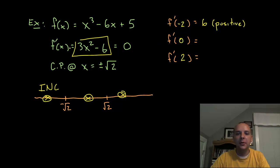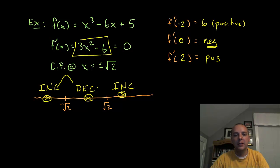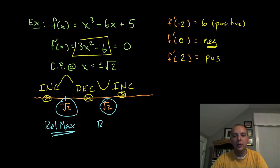If you plug in 0, 0 minus 6 is -6, that's negative, that's the important thing, so it's decreasing. And if you plug in positive 2 you get positive 6 again, which means that the graph is increasing here. So the graph goes increasing to decreasing, and then decreasing to increasing, so it should be pretty clear that -√2 is a relative max, and positive √2 is a relative min.